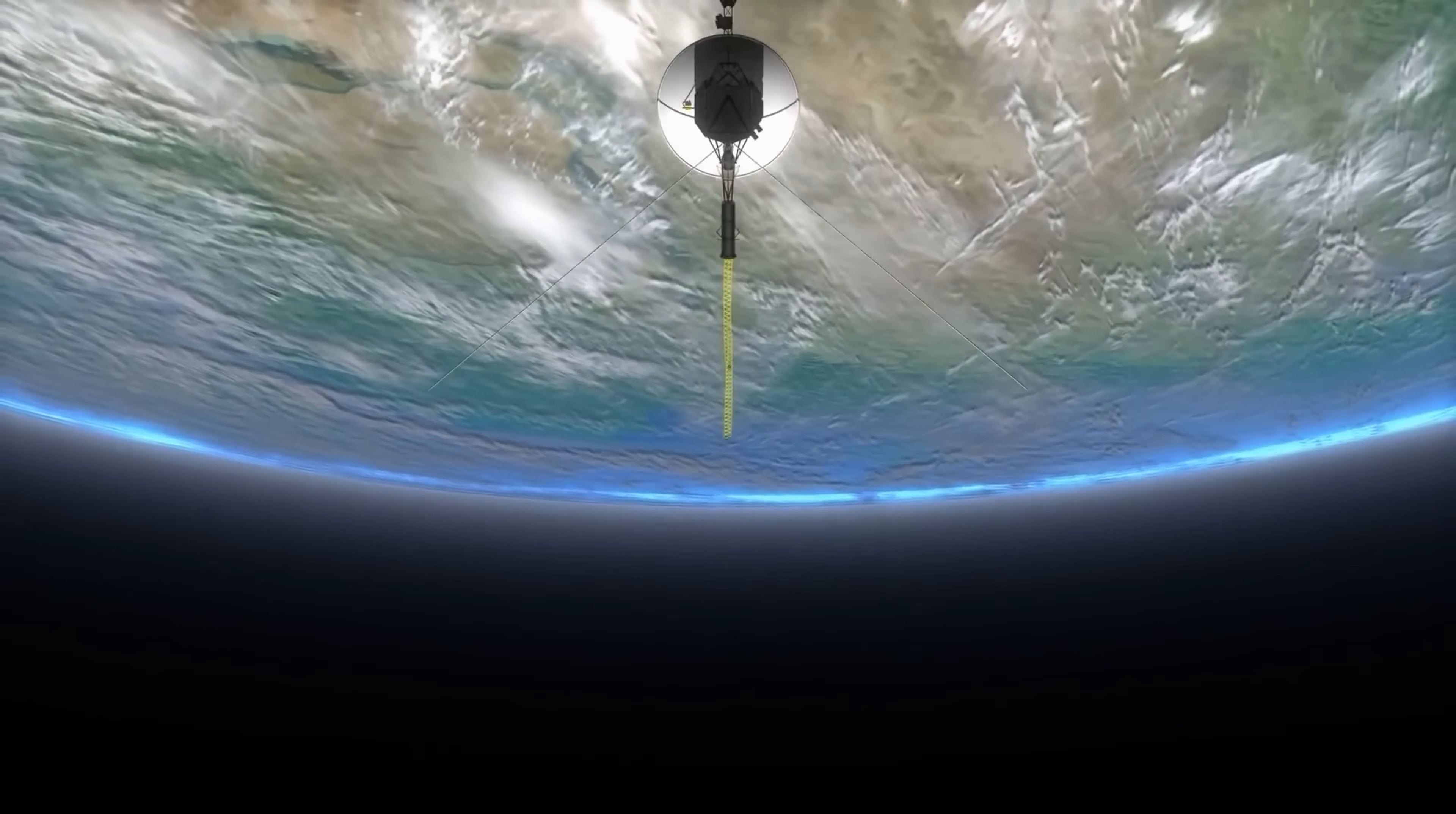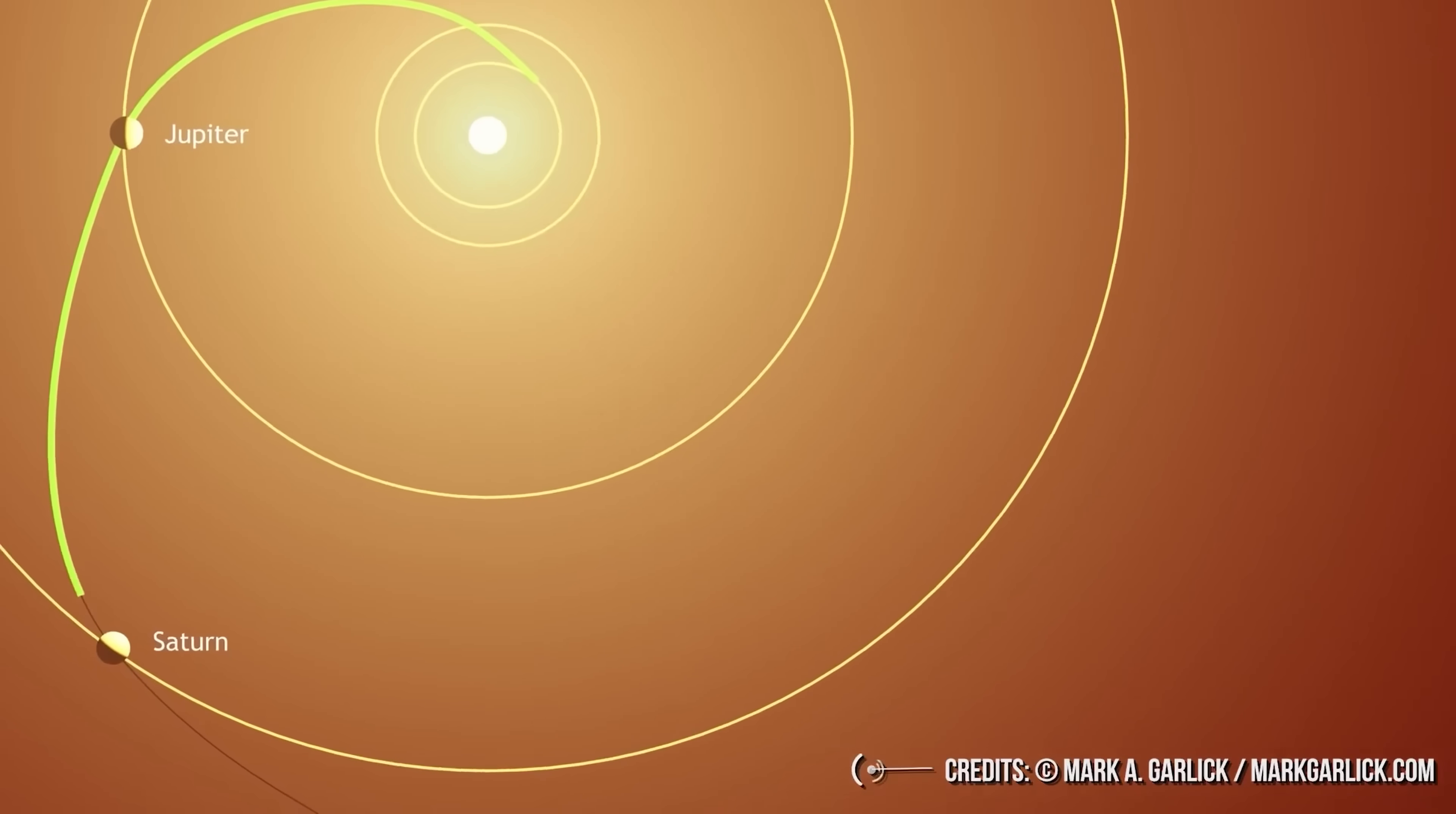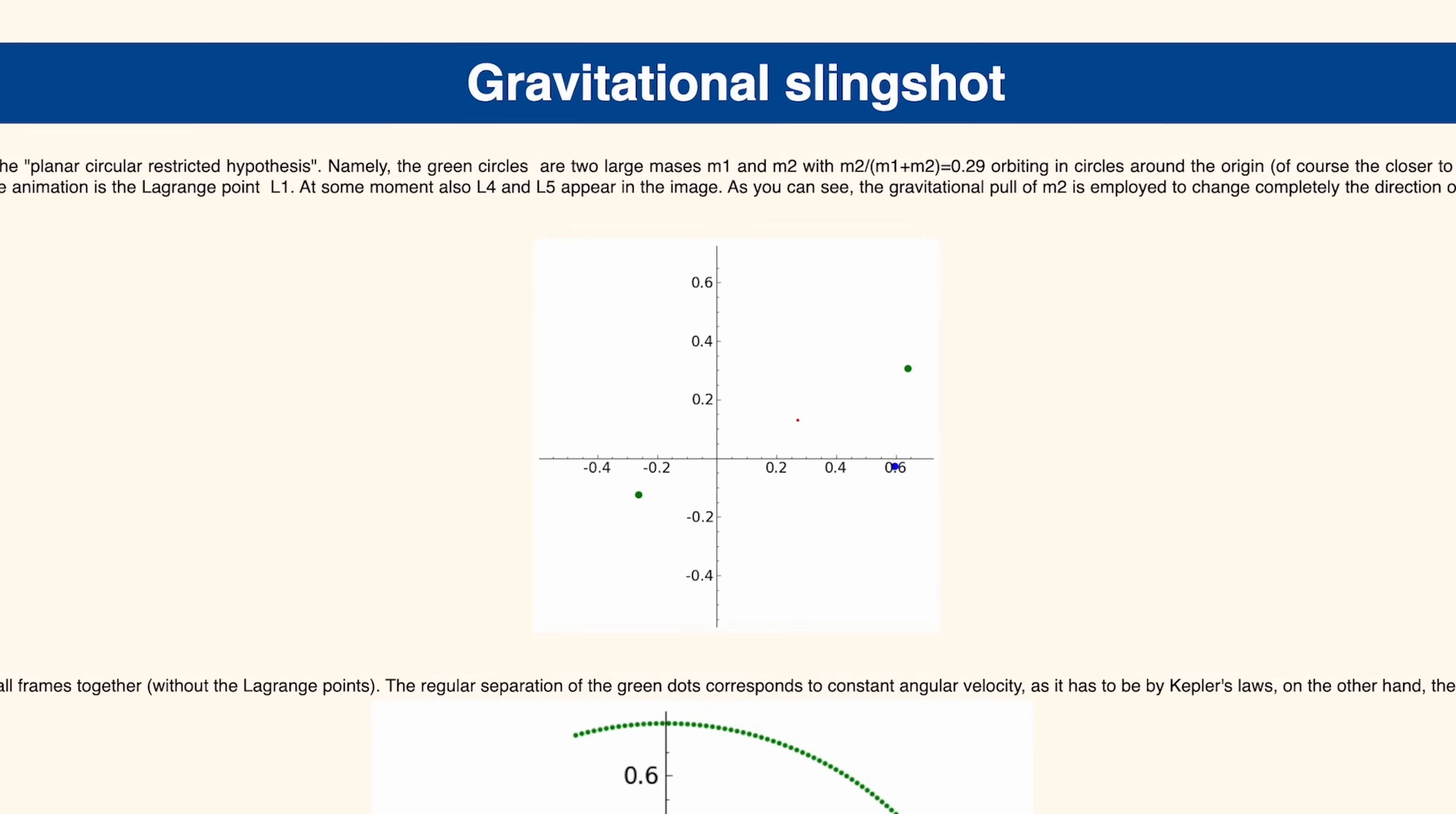I kind of lied a little bit earlier. Gravity assists, like the ones utilized by the Voyager probes, are not exactly applicable to Star Trek's slingshot effect, despite another name for gravity assist being gravitational slingshot. Why?